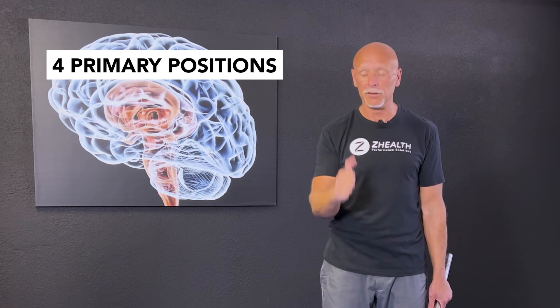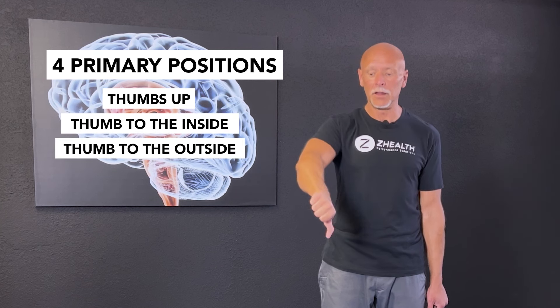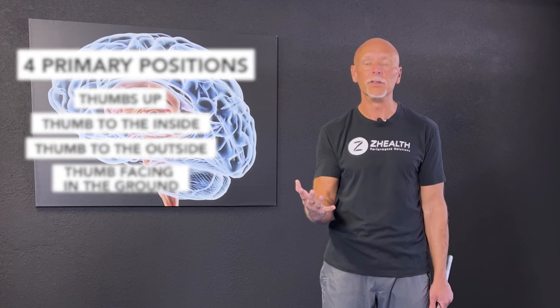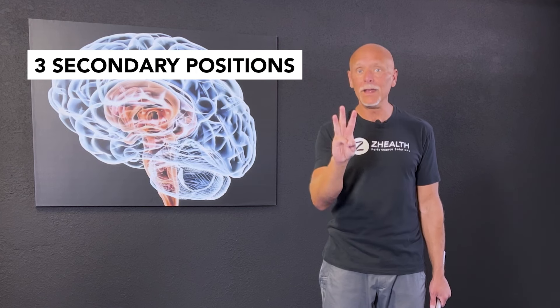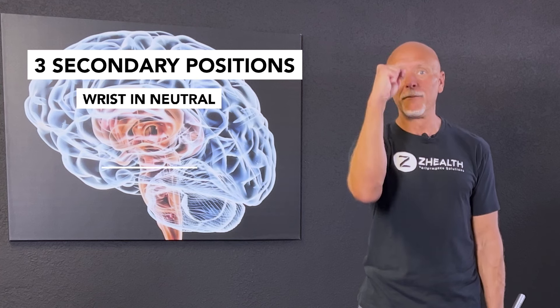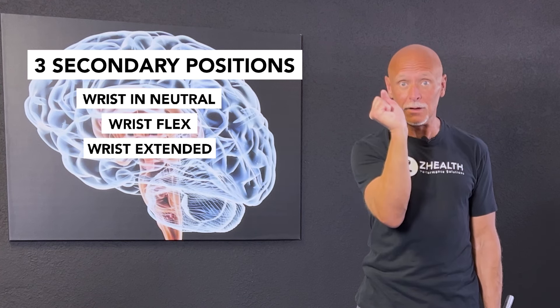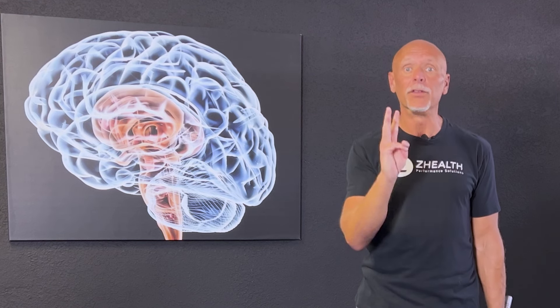So to do this, you just need to remember four primary positions: thumbs up, thumb to the inside, thumb to the outside, thumb facing the ground. Those are going to be your four primary positions. We then have three secondary: wrist in neutral, wrist flexed, wrist extended. So we have four primary and three secondary.